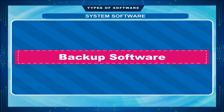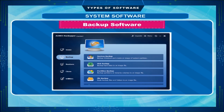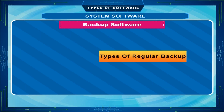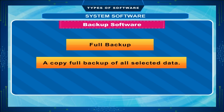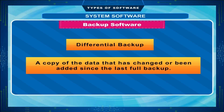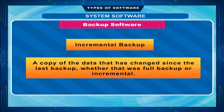Backup Software makes copies of all information stored on a disk and can restore either the entire disk, for example in the event of disk failure, or selected files, for example in the event of accidental deletion. Backups are an essential part of a PC. There are several types of regular backup: Full Backup — a copy of all selected data; Differential Backup — a copy of the data that has changed or been added since the last full backup; and Incremental Backup — a copy of the data that has changed since the last backup, whether that was a full backup or incremental.